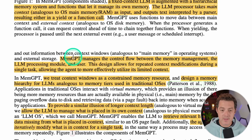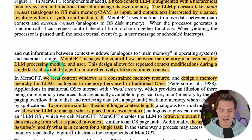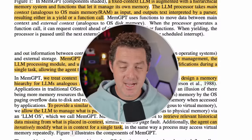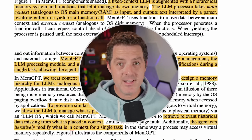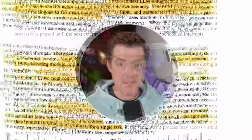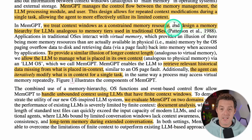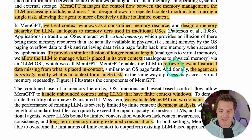MemGPT does this completely autonomously. It manages the control flow between memory management, the LLM processing module, and the user. This design allows for repeated context modifications during a single task, allowing the agent to more effectively utilize its limited context. As it performs a task, it can retrieve memory, test things out, then edit its memory and retrieve other parts it thinks might be more relevant. They treat context windows as a constrained memory resource and design a memory hierarchy analogous to memory tiers in traditional operating systems.